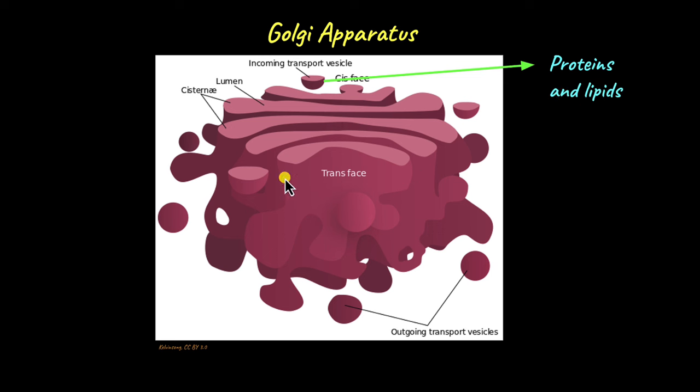Once the modifications are done, the substances reach the end of the Golgi apparatus. This part faces away from the nucleus towards the plasma membrane. This part is concave shaped and known as the trans face. From here, more vesicles are formed which contain the fully modified proteins and lipids, and these vesicles are then transported to their target locations.